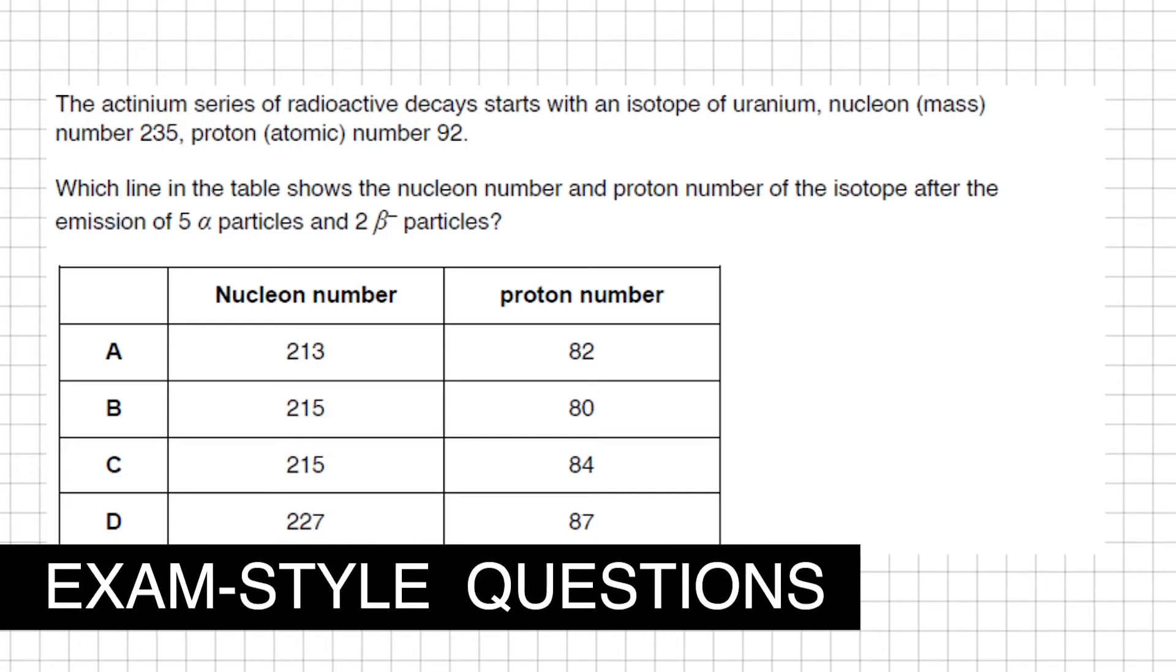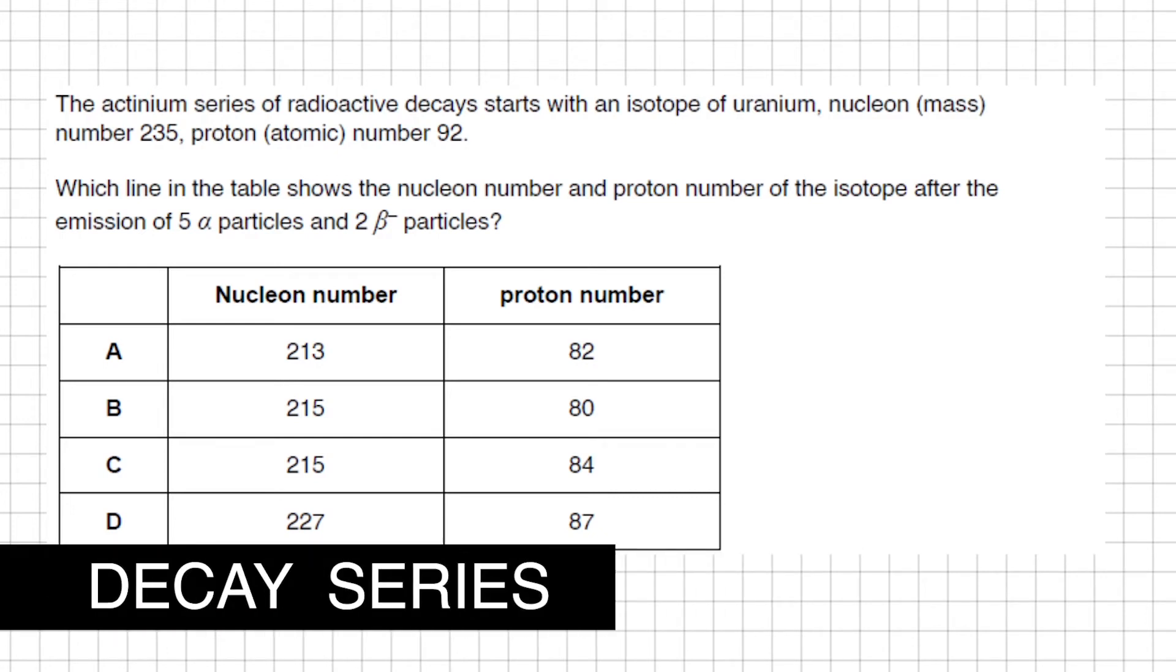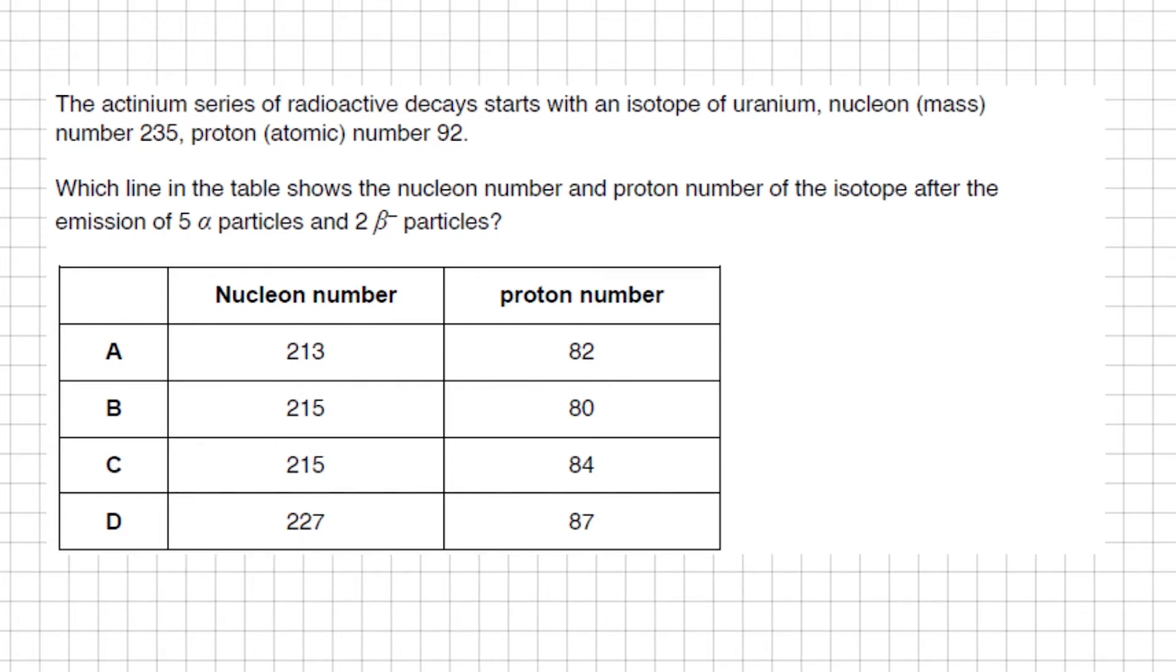I'm going to work through two exam-style questions on radioactive decay chains. Number one: the actinium series of radioactive decays starts with an isotope of uranium. Its nucleon number is 235 and proton number is 92.